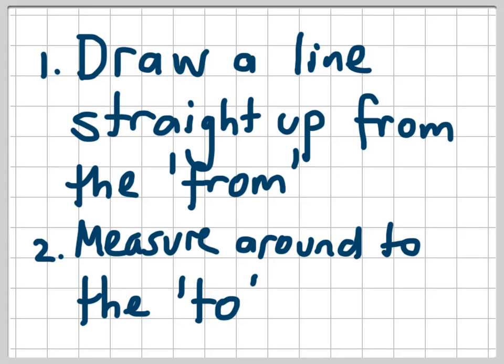And our second step is then just to measure around to the to place. So we said we're going from A to B, so I drew a line straight up from the from place from A, and now we're going to measure around to the to place. We said from A to B.